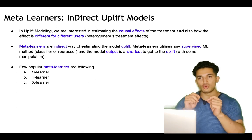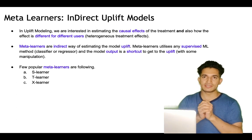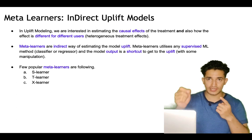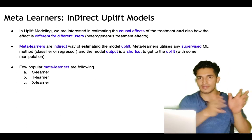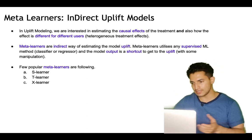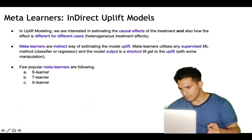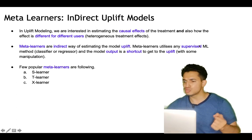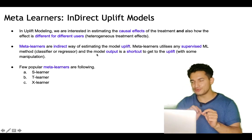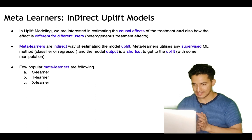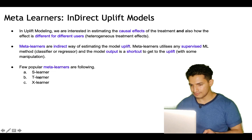As in the drug discovery example — whether the drug has more impact on elderly people or younger people — uplift modeling can help detect the causal effect of the treatment and how effective the drug is for different sections of the population, which is the conditional average treatment effect. Meta learners are an indirect way of estimating uplift. They utilize any supervised ML method — classifier or regression — and the model output is a shortcut to get the uplift with some manipulation.